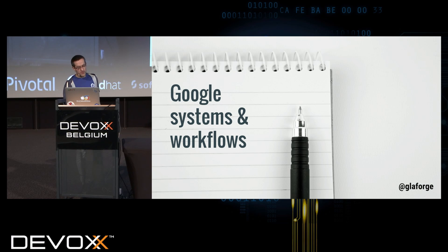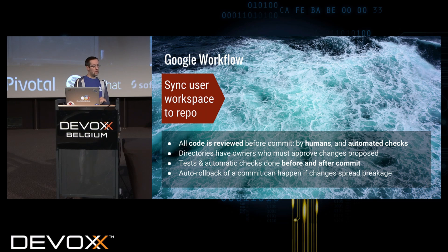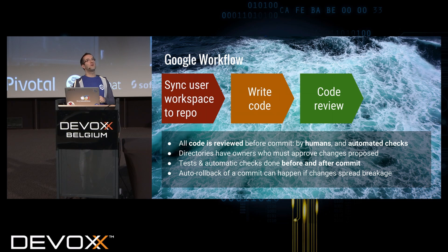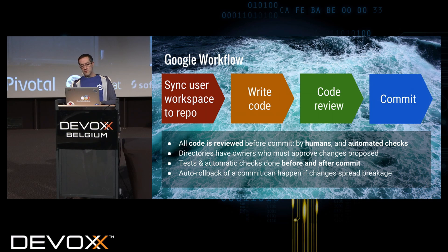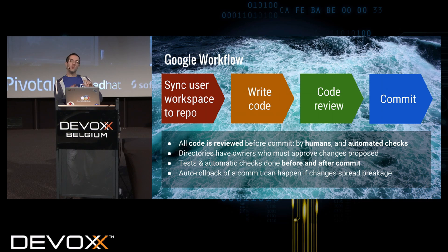For the Google systems and workflows, you work in your local environment or in a web front-end IDE in the cloud, using your workspace connected to the repository. Then you write some code, a new feature, etc. The code is always reviewed — you cannot commit anything that is not reviewed. And then you actually commit. In terms of code review, there are checks done by humans — 'this looks good to me,' or 'you should refactor this or that' — but there are also tons of automated checks with pre- and post-commit checks.